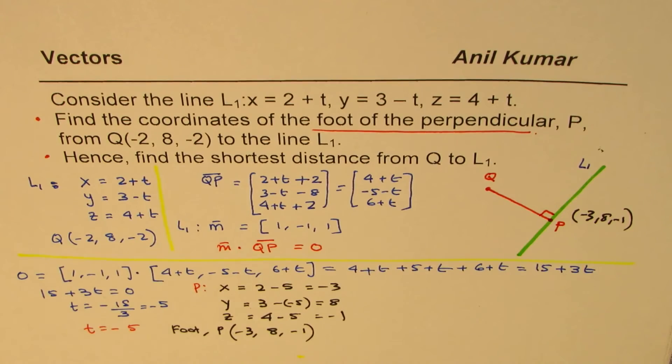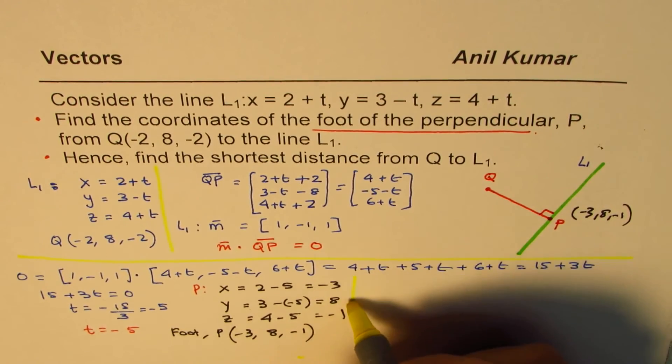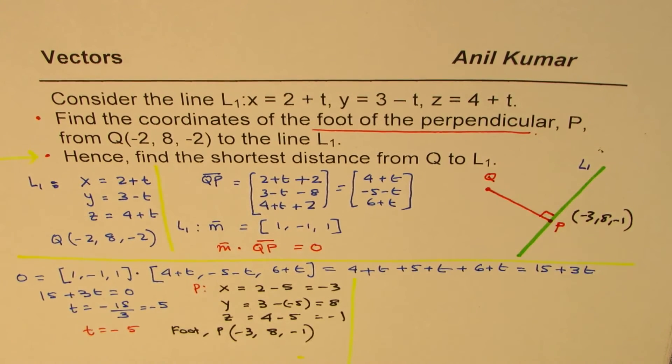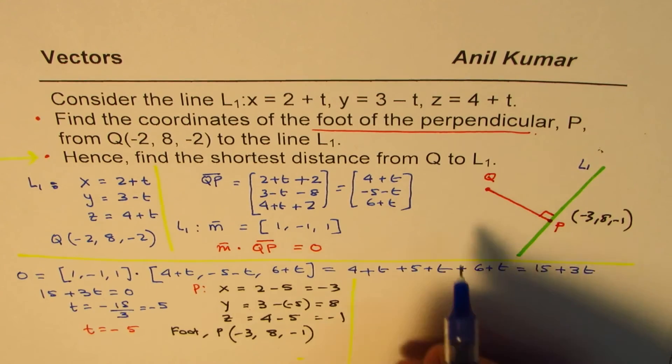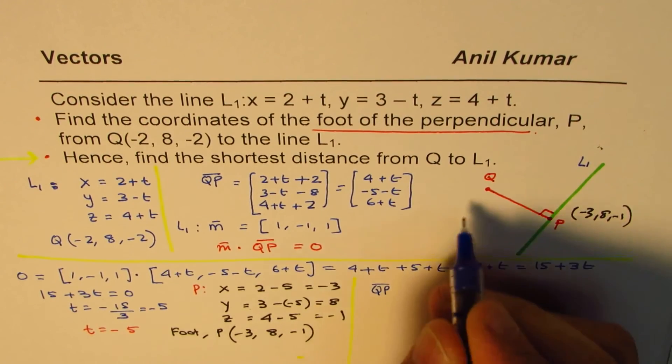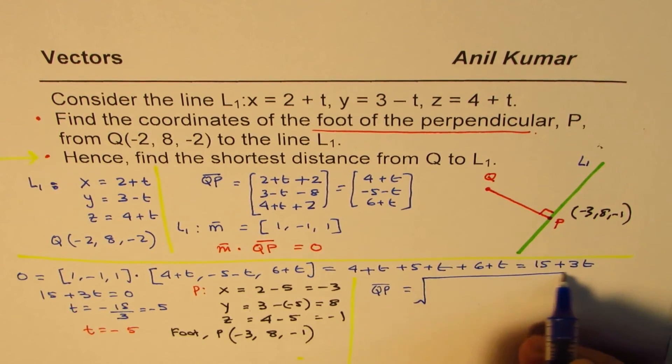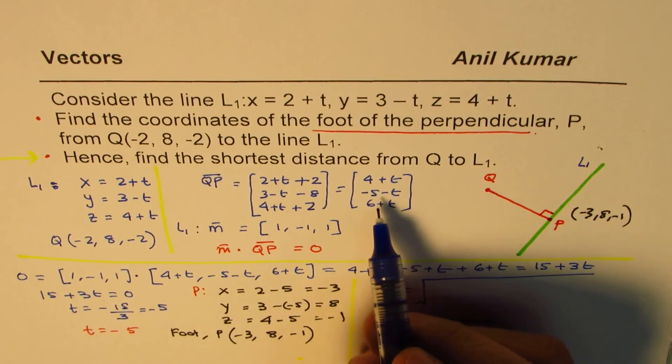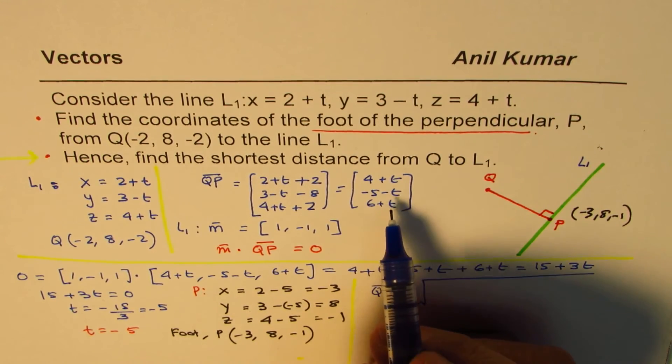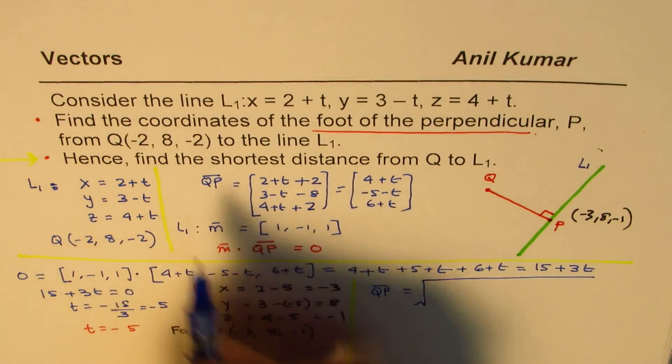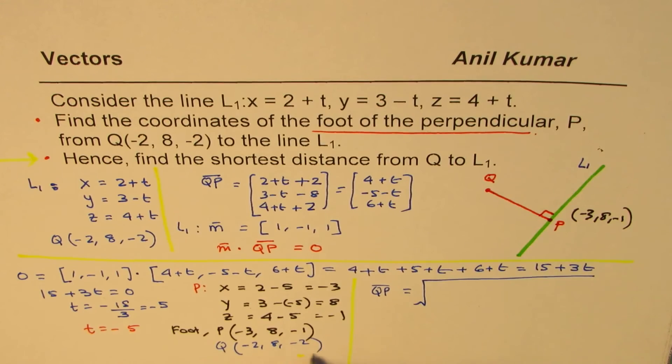So we got one part, which is foot of the perpendicular is P, which is (-3, 8, -1). So now let's do the second part, which is the shortest distance. Now we know two points, which are Q and P, and we can find the shortest distance, which is QP. Perpendicular distance is always the shortest distance. So let's write down Q here: (-2, 8, -2).